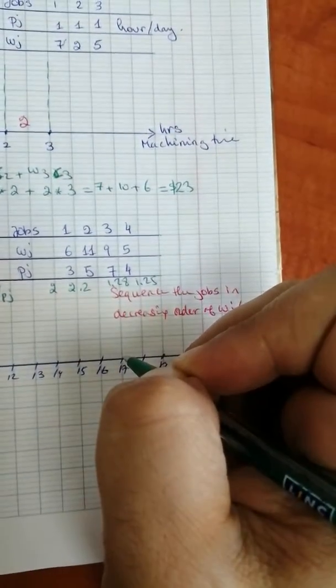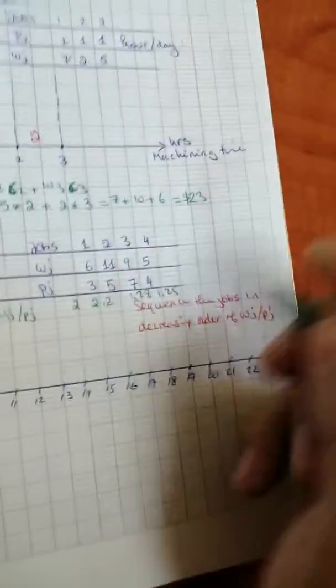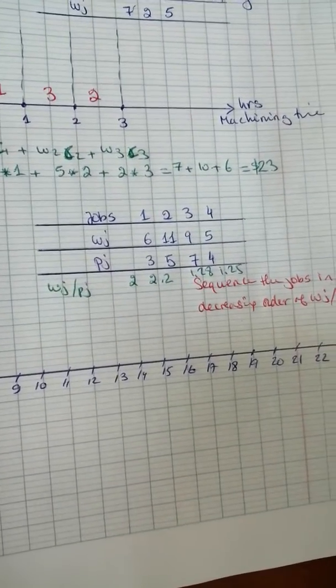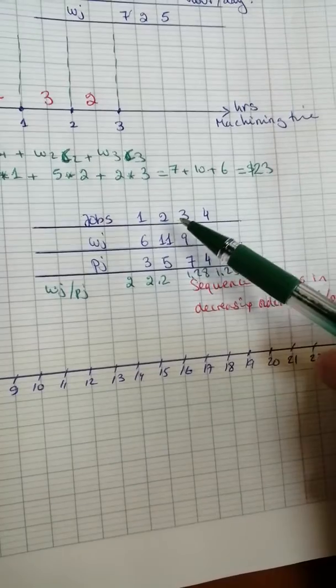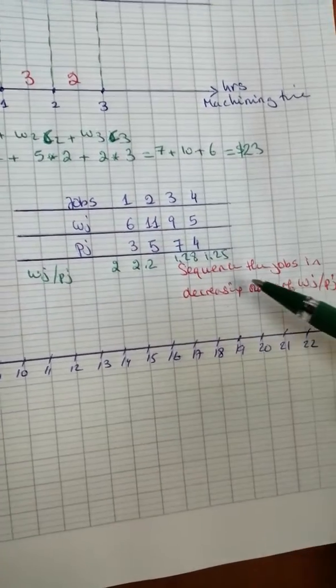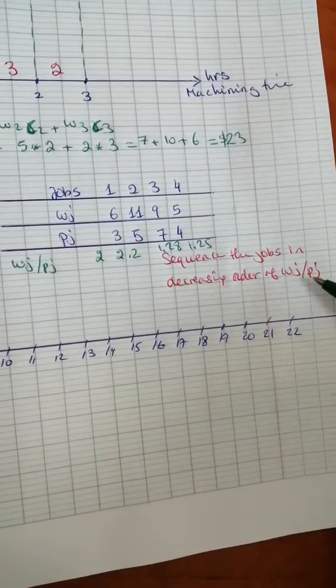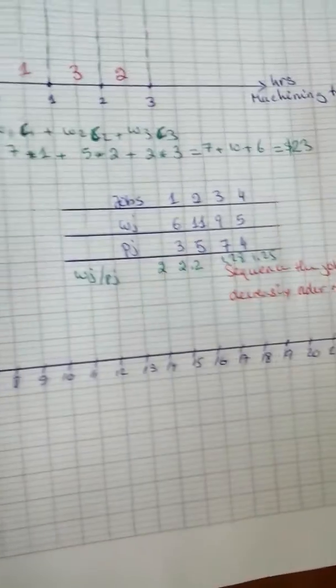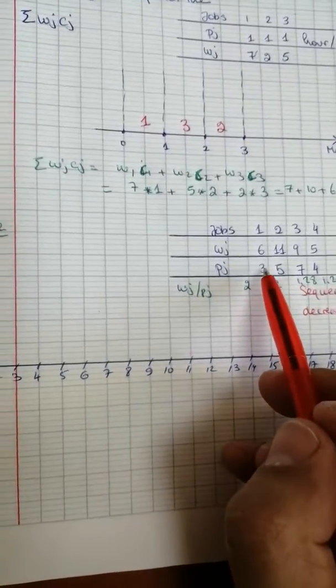So we have 2.2, 1.28, and 1.25. The easiest way in this case is to do job 1, job 2, job 3, then job 4, as we sequence the jobs in decreasing order of wj over pj.